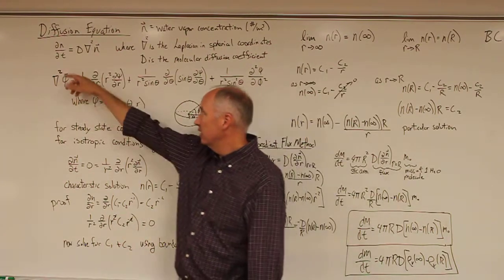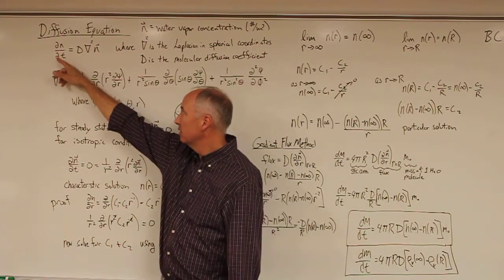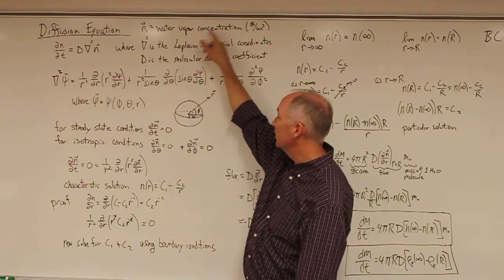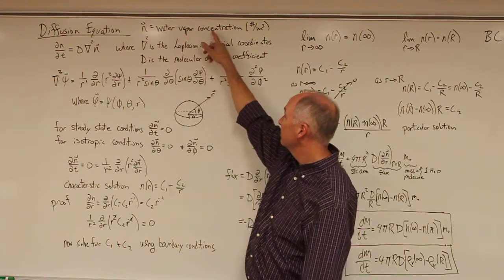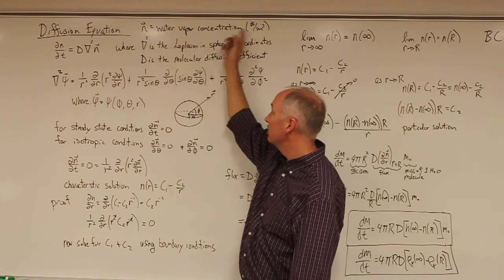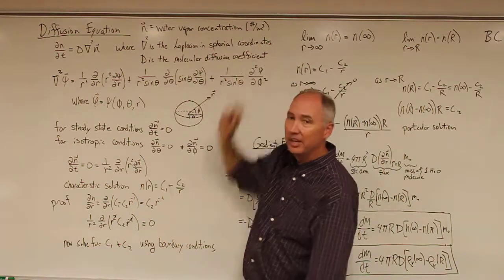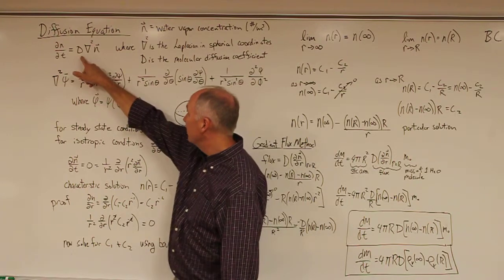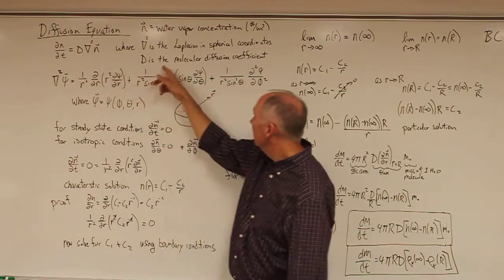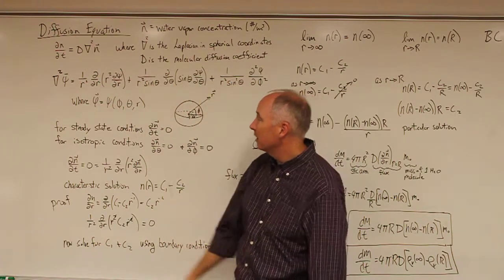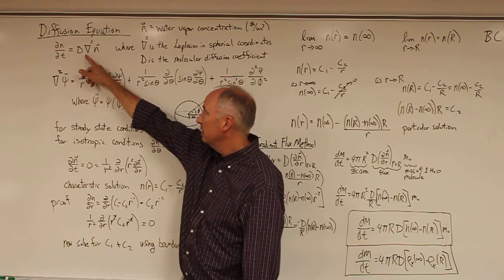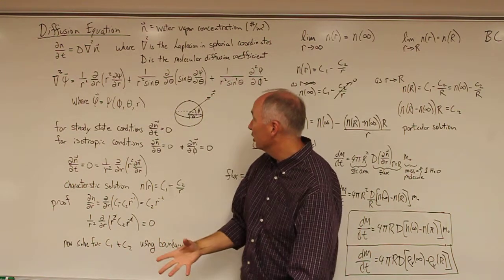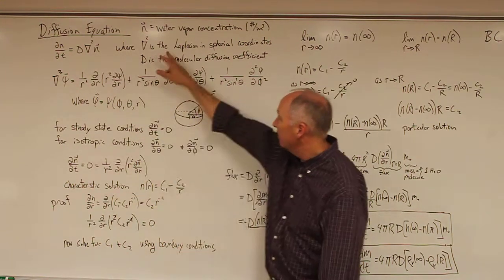From physics, the diffusion equation is the partial with respect to time of the water vapor concentration — in number of water molecules per cubic meter — is equal to the diffusivity of the water vapor molecules times the Laplacian of the water vapor field.